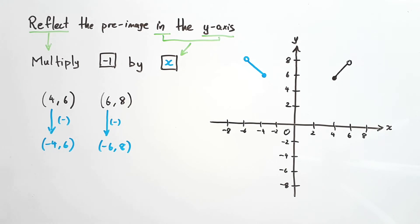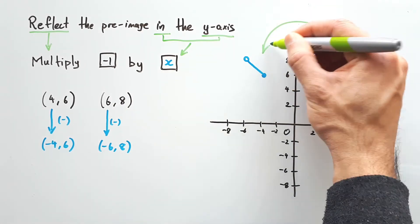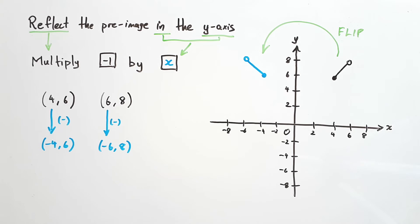Plot these image points on the same graph, and we see the line has now flipped over to the left side. You could think of it as the line was flipped sideways, or has been turned around.